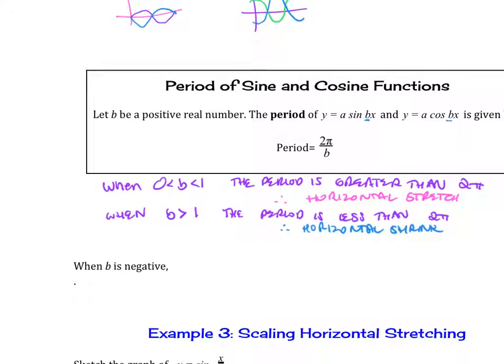So when b is negative, what we need to do is we're going to rewrite the function using the identity. That sine of negative x is going to be negative sine of x. Or remember that cosine of negative x is just going to be positive cosine of x, right? Because that's even, and then sine is odd. So you'll have to rewrite that if you see a negative in the inside.